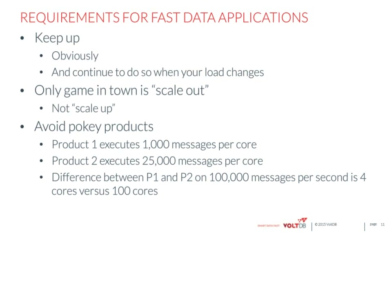Avoid slow products. For example, if product one can execute 1,000 messages per second per core and product two can execute 25,000 messages per second per core, and you've got to do 100,000 messages a second, it will take you four cores on product two and 100 cores on product one. Obviously any sane person would choose four cores. So just avoid products that are fundamentally slow.